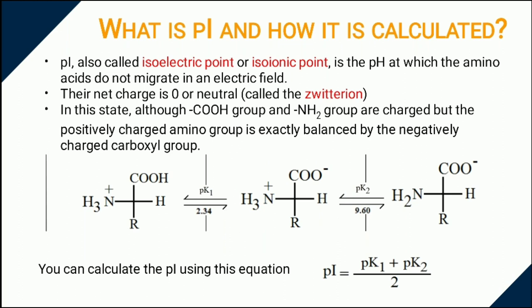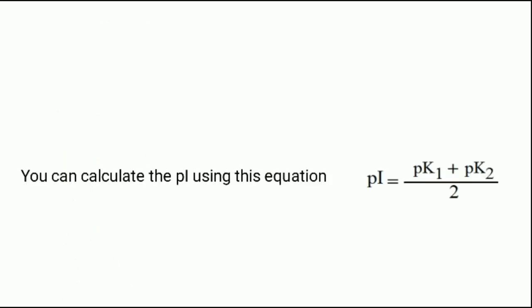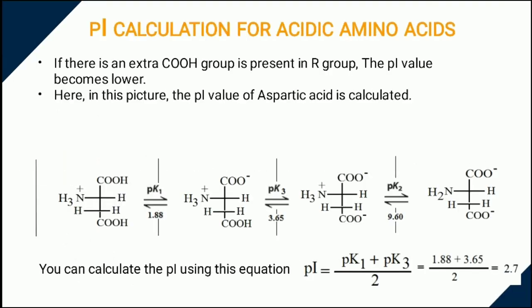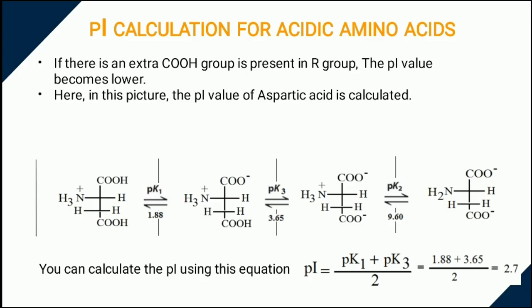PI can be calculated directly from the titration curve or using this equation. If amino acid contains an extra ionizable group in the R side chain, the titration curve becomes more complex. In this example, aspartic acid contains another carboxyl group. So PI is calculated using this formula. Note that PI is lower in this case.